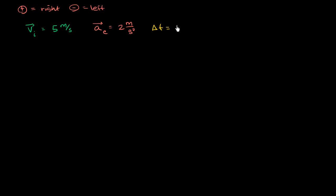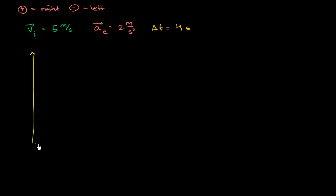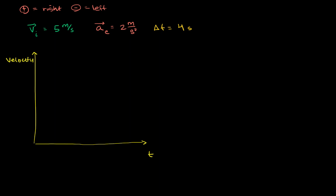And let's say that we do this for a duration — my change in time is 4 seconds. So what I want to do is think about how far we travel. There are two things: how fast are we going after 4 seconds, and how far have we traveled over those 4 seconds? So let's draw a little diagram. This is my velocity axis and this is my time axis. I'm starting off at 5 meters per second, so v_i equals 5 meters per second.